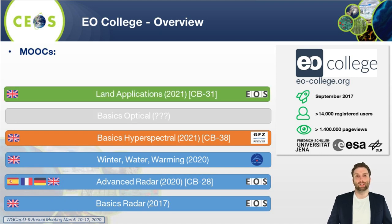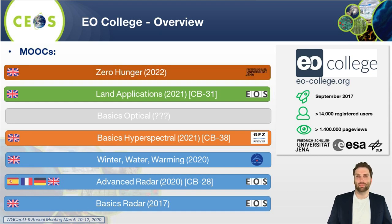Furthermore, we just recently started developing a course on the land applications of Earth Observation in collaboration with ESA, and this course will also contain some basics of optical remote sensing. On top of that, in fall we will start developing a massive open online course on the sustainable development goal Zero Hunger.